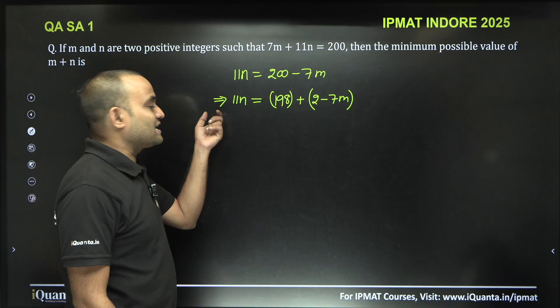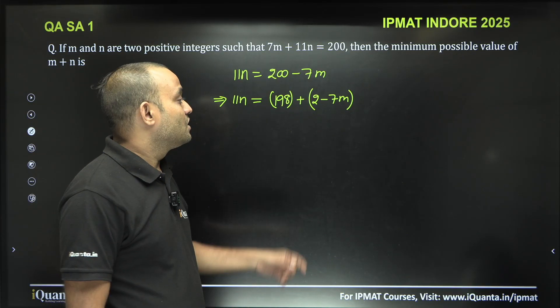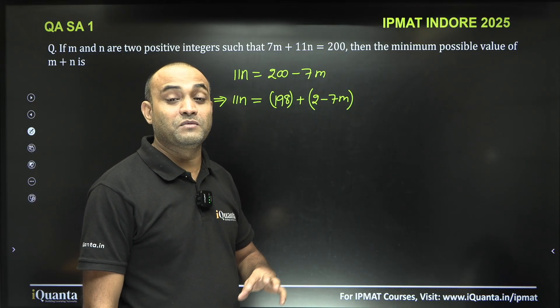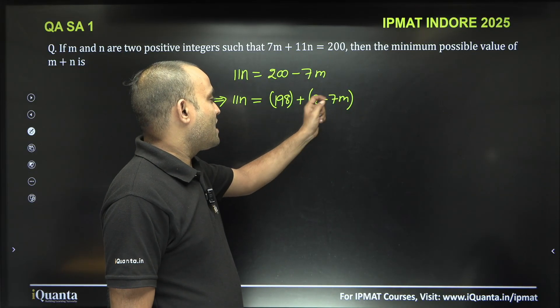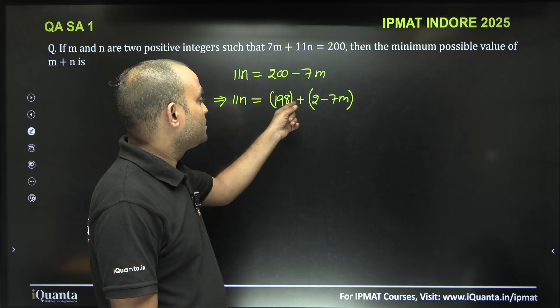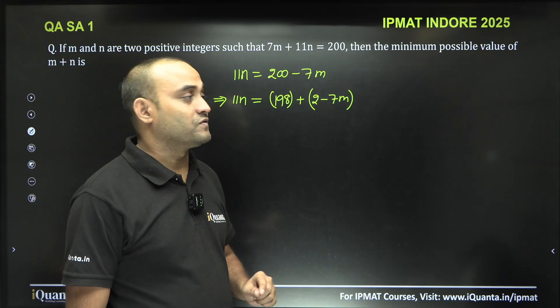Now left hand side is a multiple of 11, so right hand side should also be a multiple of 11. What is the minimum value of m for which this will become a multiple of 11: 1 or 2 or 3 or 4 or 5? If I take m is equal to 5, 2 minus 35 will become minus 33 which is a multiple of 11.